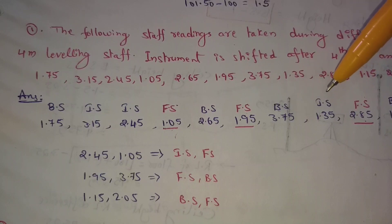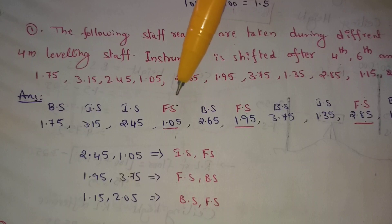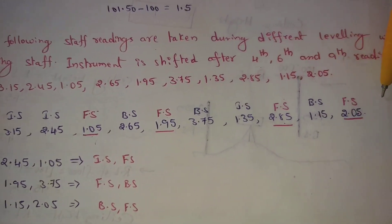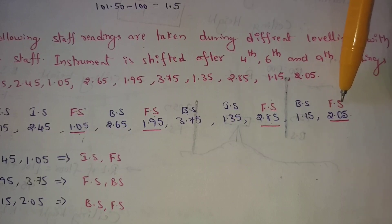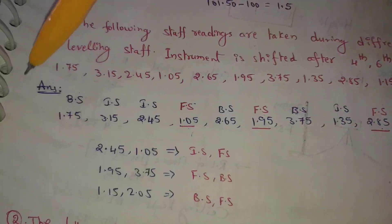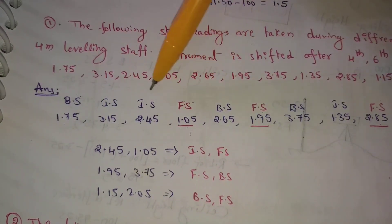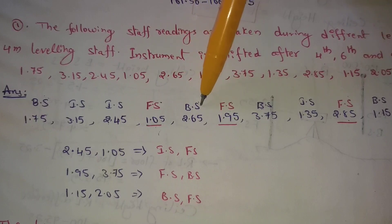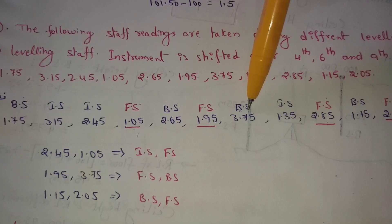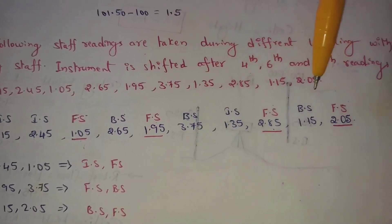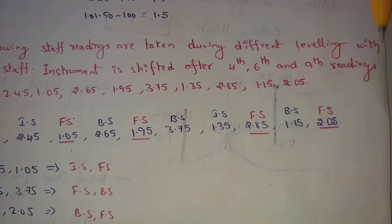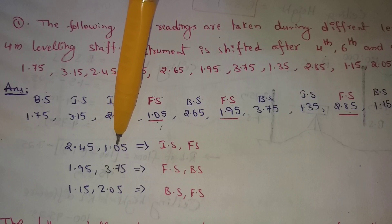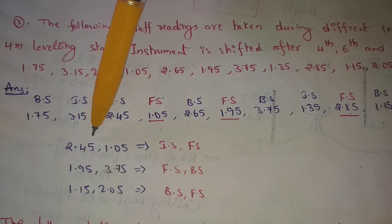The back-site and intermediate-site readings are classified as follows: the last value 2.05 is foresight, and the first reading value is backsite. The values in between are intermediate sites. Foresight is automatically next to the heading backsite, and the readings between foresight and backsite are intermediate sites. Here 2.45 is intermediate site.